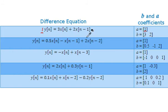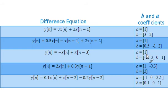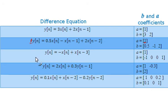Moving on to the second example — we again have only one Y term and therefore one A coefficient, corresponding to the coefficient in front of the Y term, which is 1, even though it's not explicitly shown. We also have three X terms.